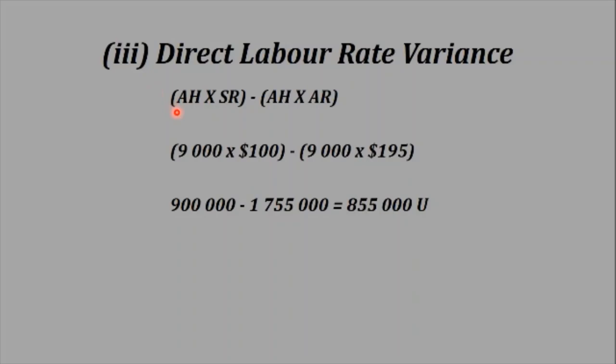Three: the direct labor rate variance. The formula is AH × SR minus AH × AR. Again, we can factor out the common term — actual hours — and inside the bracket we have SR minus AR. Working it out gives 855,000, but this time it is unfavorable or adverse. The reason is that the standard rate is smaller than the actual rate.